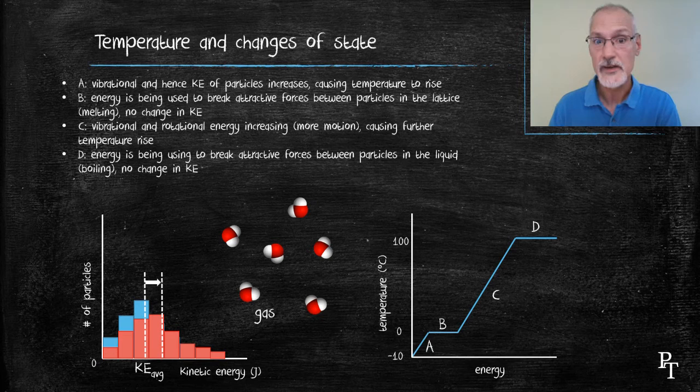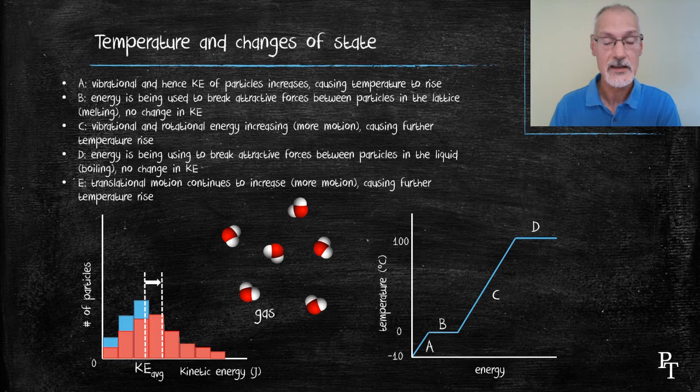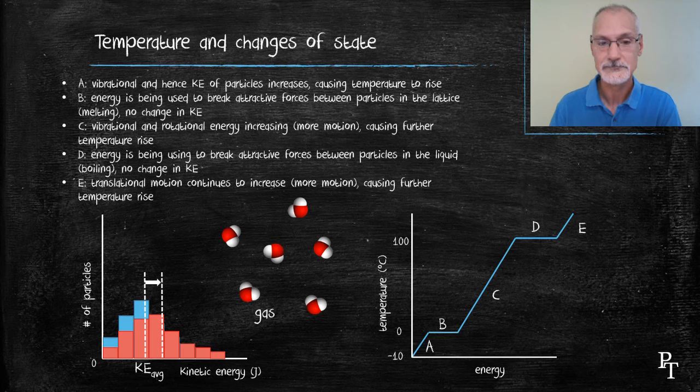Once I've turned all of my sample into a gas, now I can increase through translational motion by the addition of more heat, and hence their kinetic energy increases further as shown here in stage D. So that's a quick review of some of the particle nature of matter.